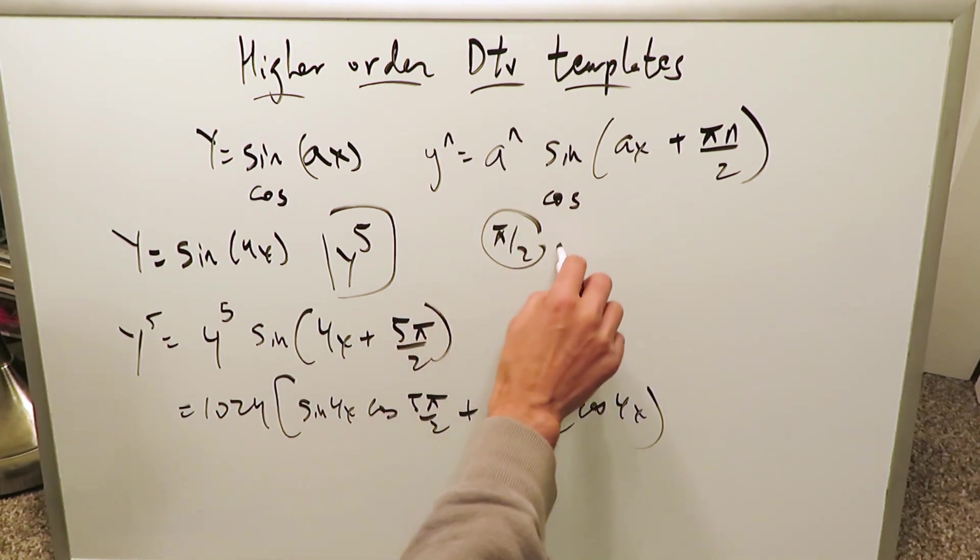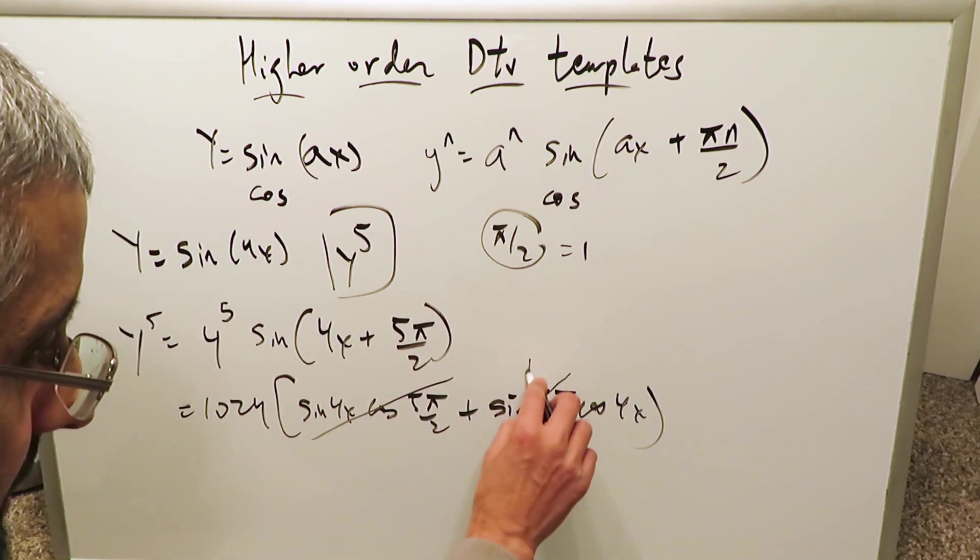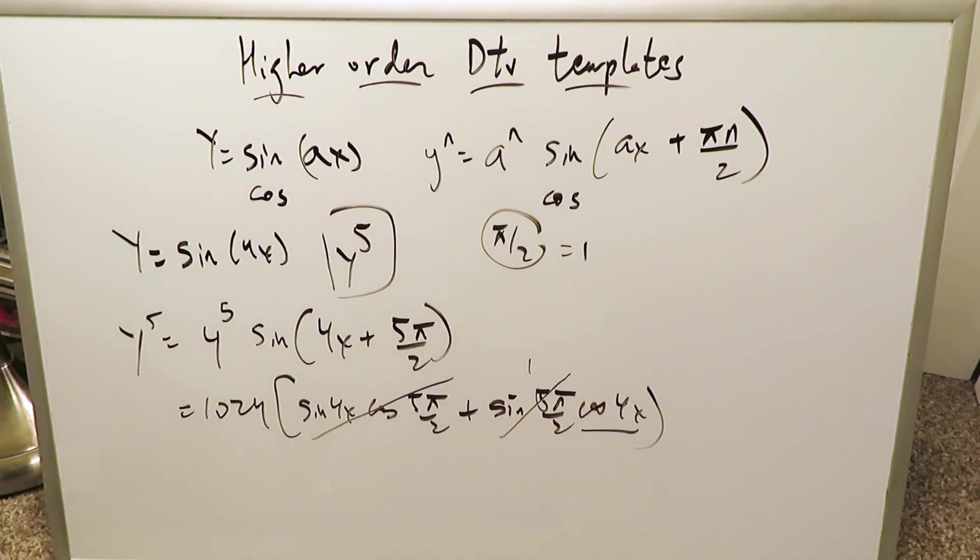Sine of 5π/2, sine of π/2 are equal to 1 but cosine of these angles is always equal to 0. That 0 is out. Sine of this angle is equal to 1. The only thing which remains is cosine 4x. If someone were to ask you what's the fifth order derivative of this function using the template, well it's 1024 cosine 4x and that would be your answer. The fifth order derivative we have used an easy template.